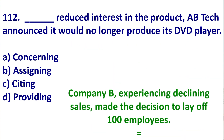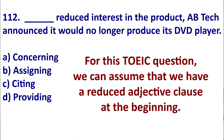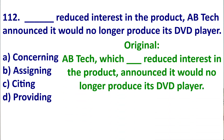So let's go to this TOEIC question. We can assume this is a reduced adjective clause at the start. If we look at the original, it might be 'AB Tech which was concerning,' 'which concerned,' 'which was assigning,' 'which assigned,' 'which was citing,' 'which cited,' 'which was providing,' or 'which provided.' That would be the original adjective clause.